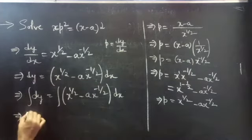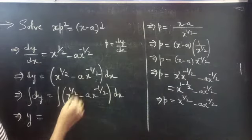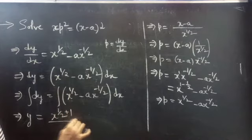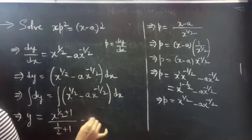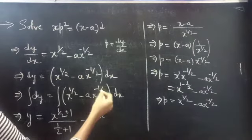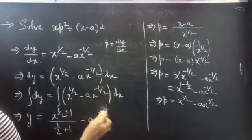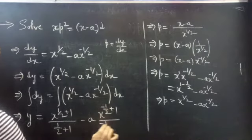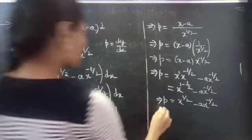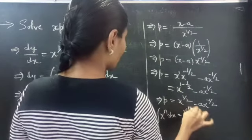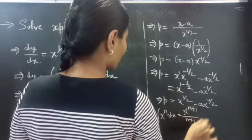Integral dy equals integral of (x power 1 by 2 minus a into x power minus 1 by 2) dx. Then y equals integral of x power 1 by 2, which is x power (1 by 2 plus 1) by (1 by 2 plus 1), minus a into x power (minus 1 by 2 plus 1) by (minus 1 by 2 plus 1). Here we have used the formula: integral of x power n equals x power (n plus 1) by (n plus 1) plus constant c, for n not equal to minus 1. Here n equals 1 by 2 and n equals minus 1 by 2, which are not equal to minus 1, so we have applied this formula.